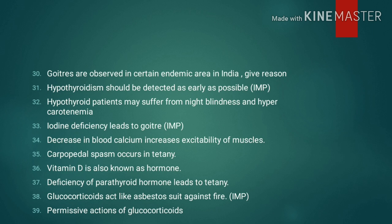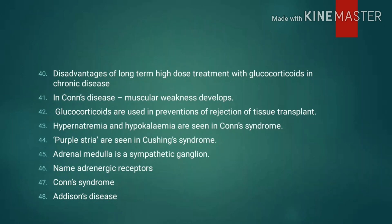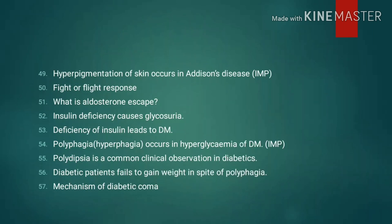Give reasons continued: 39. Permissive actions of glucocorticoids. 40. Disadvantages of long-term high-dose treatment with glucocorticoids in chronic disease. 41. In Conn's disease, muscular weakness develops. 42. Glucocorticoids are used in prevention of rejection of tissue transplants. 43. Hypernatremia and hypokalemia are seen in Conn's syndrome. 44. Purple striae are seen in Cushing's syndrome. 45. Adrenal medulla is a sympathetic ganglion. 46. Name adrenergic receptors. 47. Conn's syndrome. 48. Addison's disease. 49. Hyperpigmentation of skin occurs in Addison's disease.